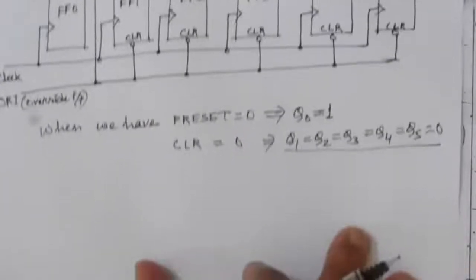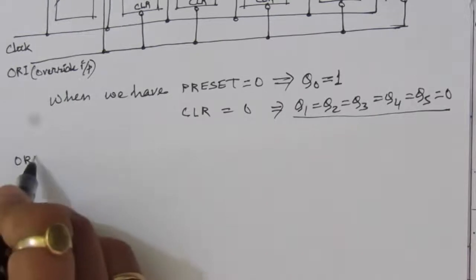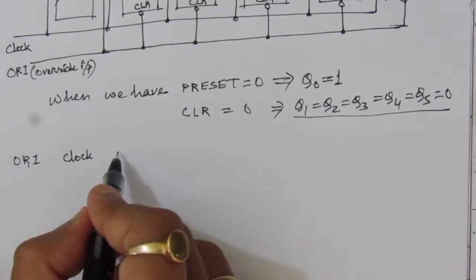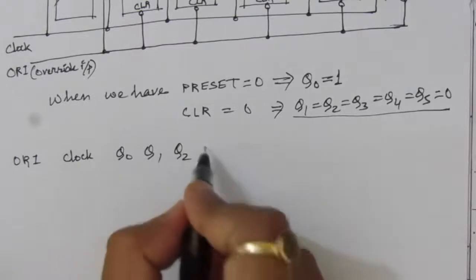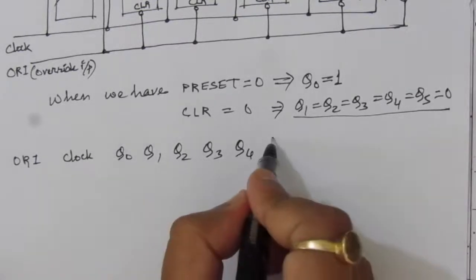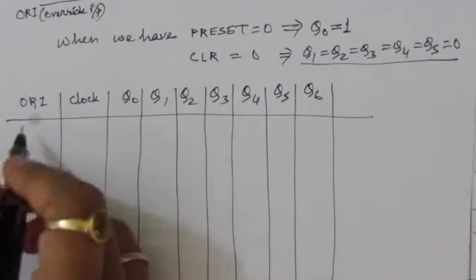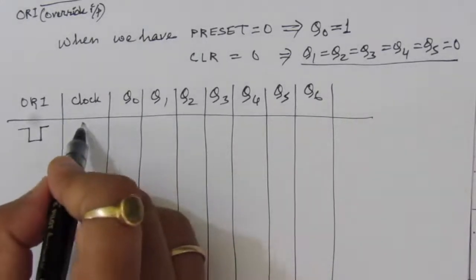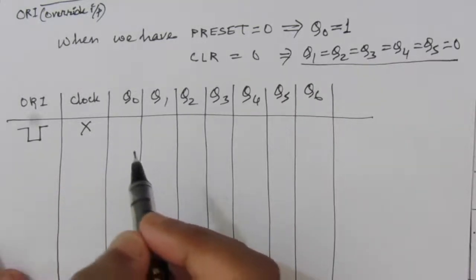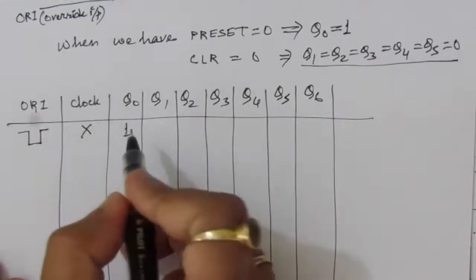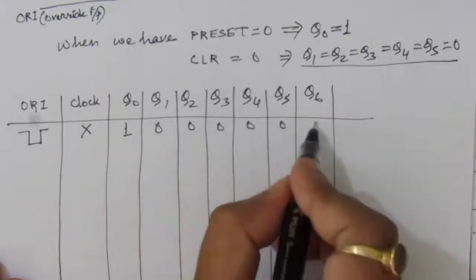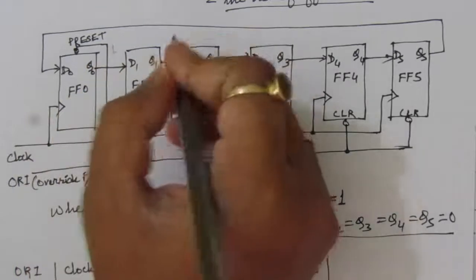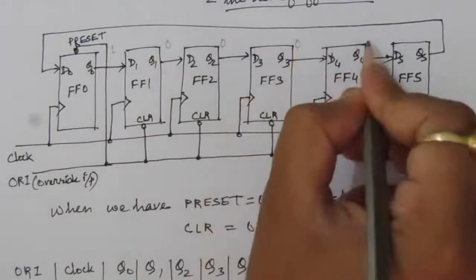Now let us see the operation of this circuit. Whenever we have an active-low signal at the overwrite input — irrespective of the clock signal — the first flip-flop output becomes 1 and the rest become 0. So at the first step we have Q0=1 and Q1,Q2,Q3,Q4,Q5 all equal to 0.